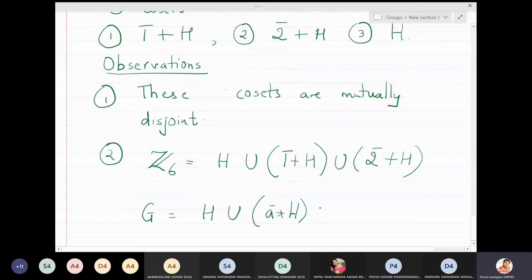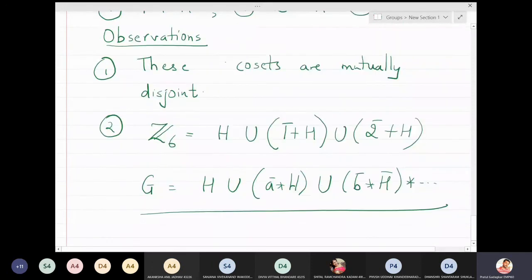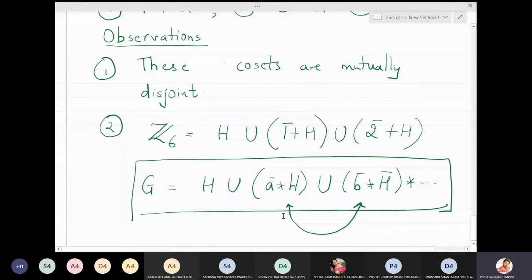Their union will come up to be exactly G, and any two cosets will have nothing common in them. They are all disjoint from each other. So these are the two important observations that we have done from these two problems.